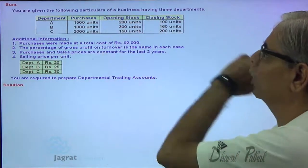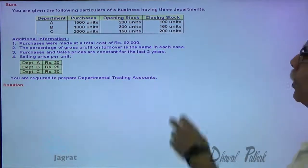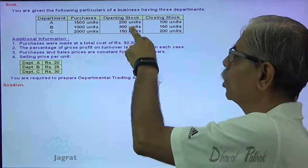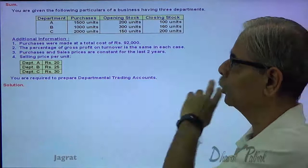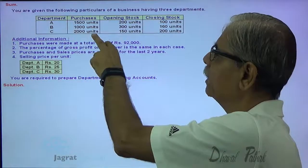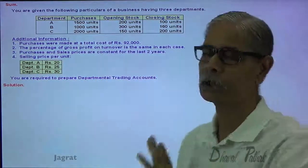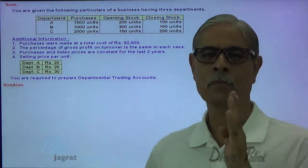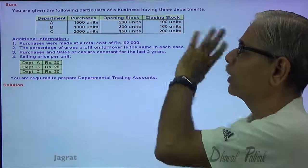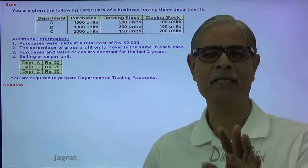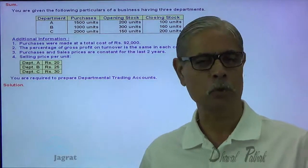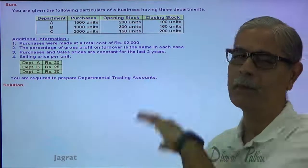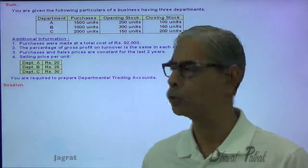You are given the following particulars of a business having three departments A, B, and C. Purchase in units, opening stock units, and closing stock in units are given for all three departments. On the basis of that, you can find out the number of units sold — opening stock plus purchases minus closing stock gives you units sold.